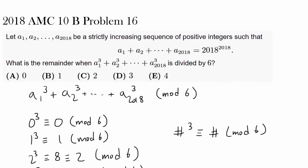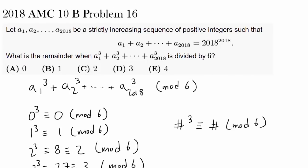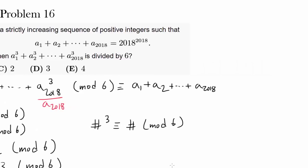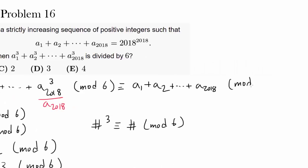That's simplifying our problem greatly. That's telling us that A sub 1 cubed is congruent to A sub 1 mod 6, A sub 2 cubed is congruent to A sub 2 mod 6, all the way to A sub 2018 cubed simply being A sub 2018. So we simply have to find A sub 1 plus A sub 2 all the way to plus A sub 2018 in mod 6. And we already know the value of this summation. That's 2018 to the 2018th power.